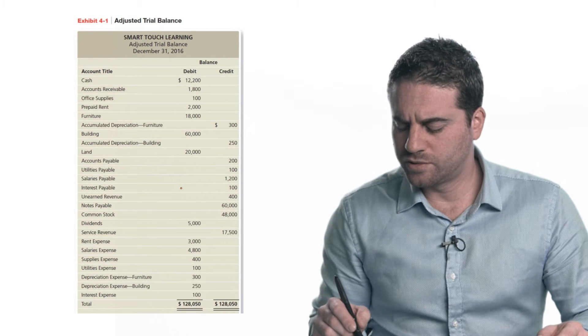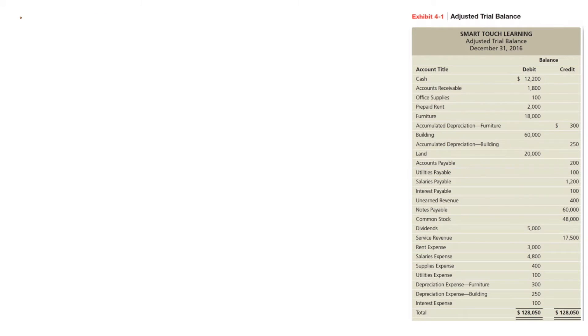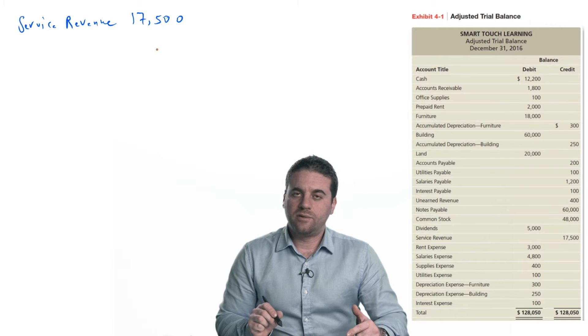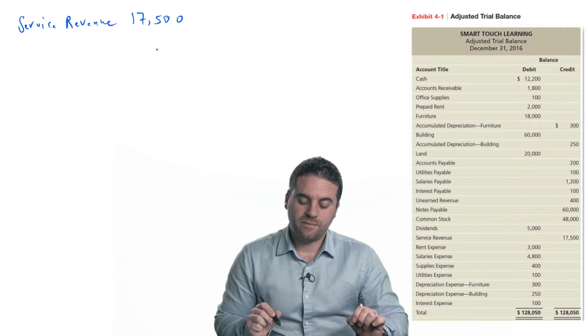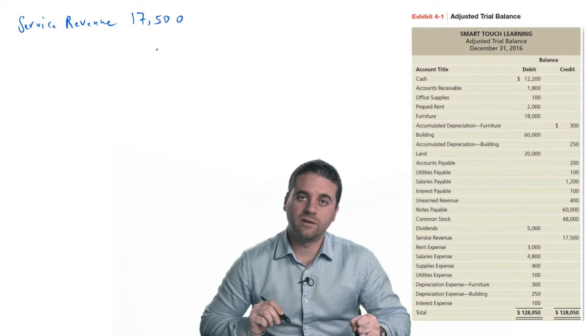Let's start by closing revenues — it's a journal entry, just a regular journal entry recorded for closing. Looking at the adjusted trial balance, service revenue has $17,500. So I'm going to debit service revenue for $17,500. Now, if I debited service revenue, what am I going to credit? When we do the closing process, we come up with a new account called income summary. That account will not show in any of the financial statements.